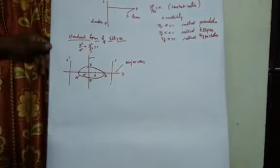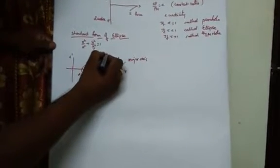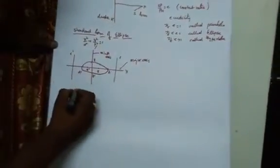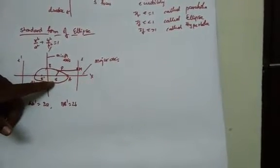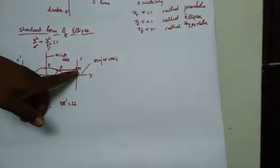The axis on which the ellipse does not lie is called the minor axis. Therefore the length of the major axis AA dash equals 2a, and the length of the minor axis BB dash equals 2b. Let P be any point on the ellipse. SP is the distance from focus to P, and PM is the perpendicular distance from point P(x, y) to the directrix. Therefore we have to find out the focus as well as the equation of the directrix.